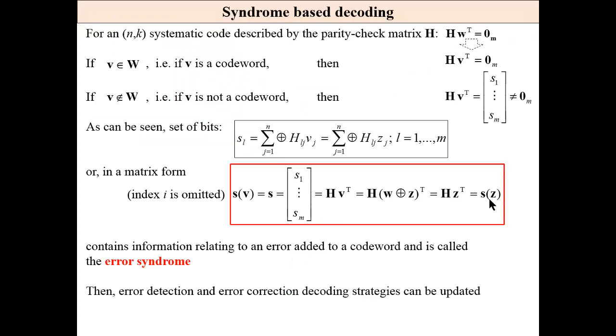Syndrome based decoding. Matrix H multiplied by a codeword, transposed codeword column vector, is zero. Then if the received word belongs to the set of codewords, then multiplied by transposed and multiplied by H gives zero as well.